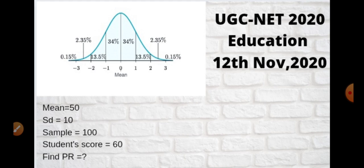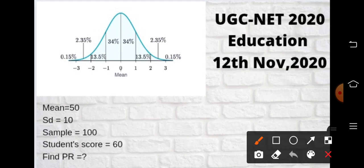In the question, the mean score was 50, the standard deviation was 10, and the sample size was 100. A particular student's score, say X, is 60. Find the percentile rank.